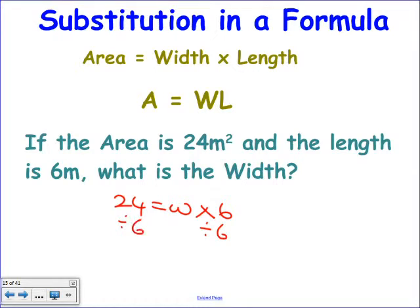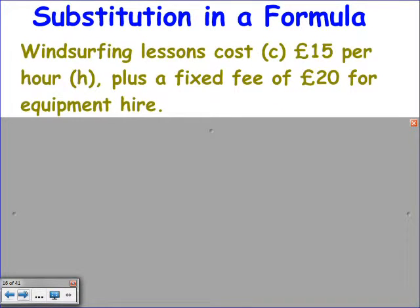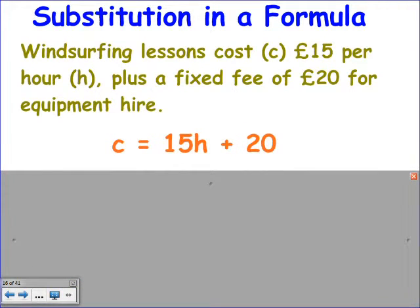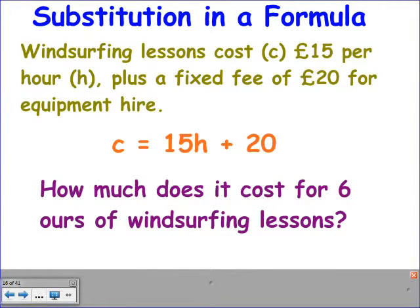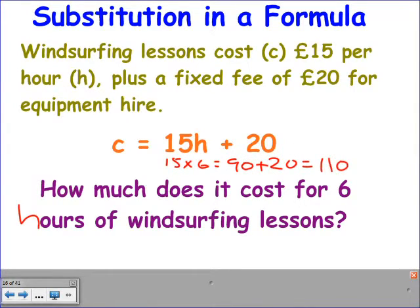They can also give you a formula that's slightly trickier. The area is 24, equal to the width times a length of 6. Divide both sides by 6 and the width is 4 metres. When you have a formula, they don't have to give you everything neatly on one side. Here's a very similar question: windsurfing lessons cost £15 an hour plus a fixed fee of £20. The cost C equals 15H plus 20. How much for 6 hours? £15 times 6 is £90, plus £20 gives £110.